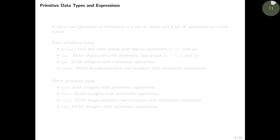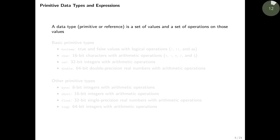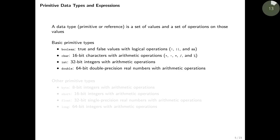Now let's discuss primitive data types and expressions. A data type is defined as a set of values and a set of allowed operations on those values. In Java, a data type can be primitive or reference. There are eight primitive types in all. The four fundamental ones are boolean, char, int, and double. Boolean values are just true and false.